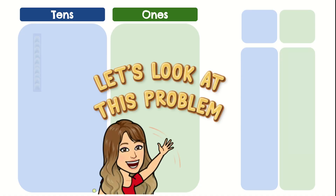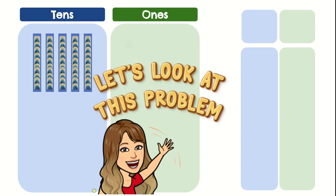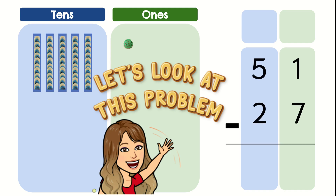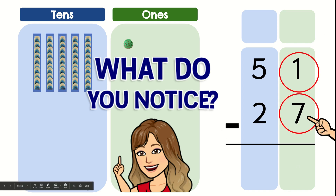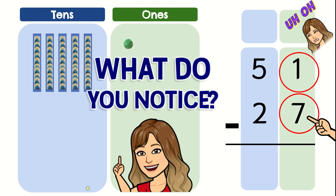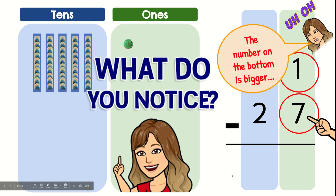Let's look at this problem: 10, 20, 30, 40, 50, 51 minus 27. What do you notice? Look at our algorithm over here. What do you notice? Uh-oh. The number on the bottom is bigger, so we know when that happens it is a problem with regrouping.